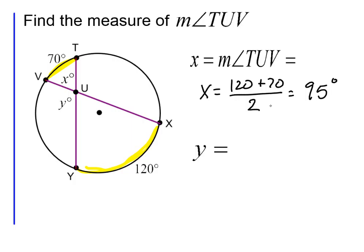To figure out angle y, we need to remember that angle x and angle y together form 180 degrees. So all I need to do, now that I have an x of 95, is subtract it from 180 degrees. I end up with an angle of 85 degrees.